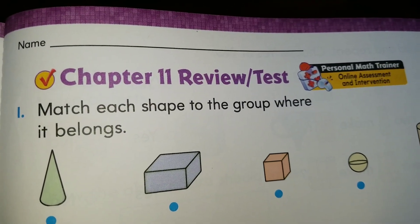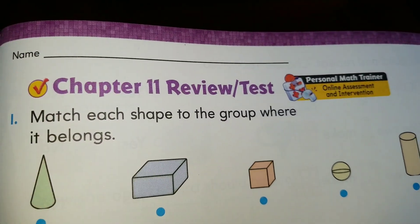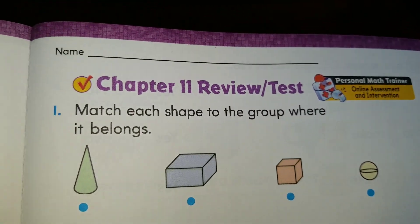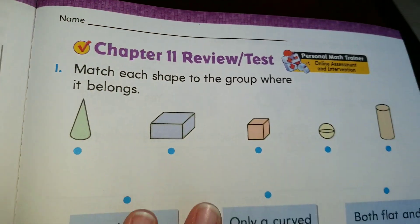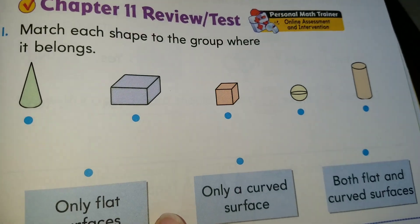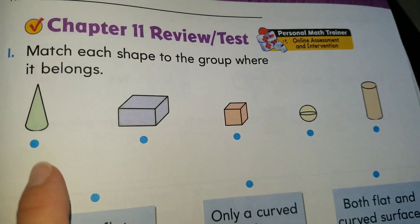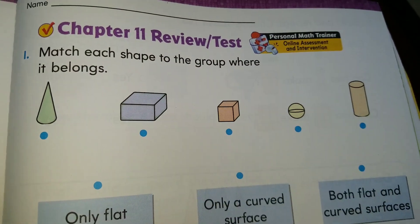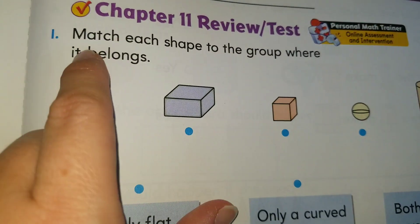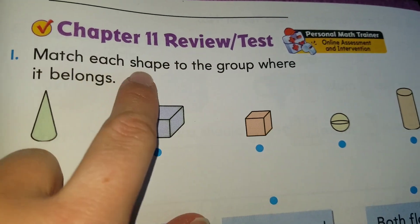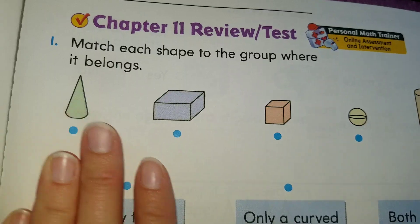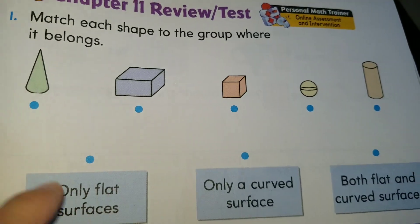I don't need you to write it in any other page but this one right here. Alright boys and girls, so question number one. On question number one, it's more than one question actually. Because we are going to have to connect the shapes to its properties or the way they look. So it says over here number one, match each shape to the group where it belongs. Let's take a look at it boys and girls.